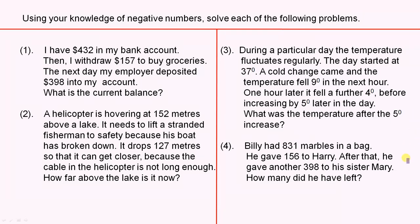And for the last one: Billy had 831 marbles in a bag. He gave 156 to Harry. After that, he gave another 398 to his sister Mary. How many did he have left?